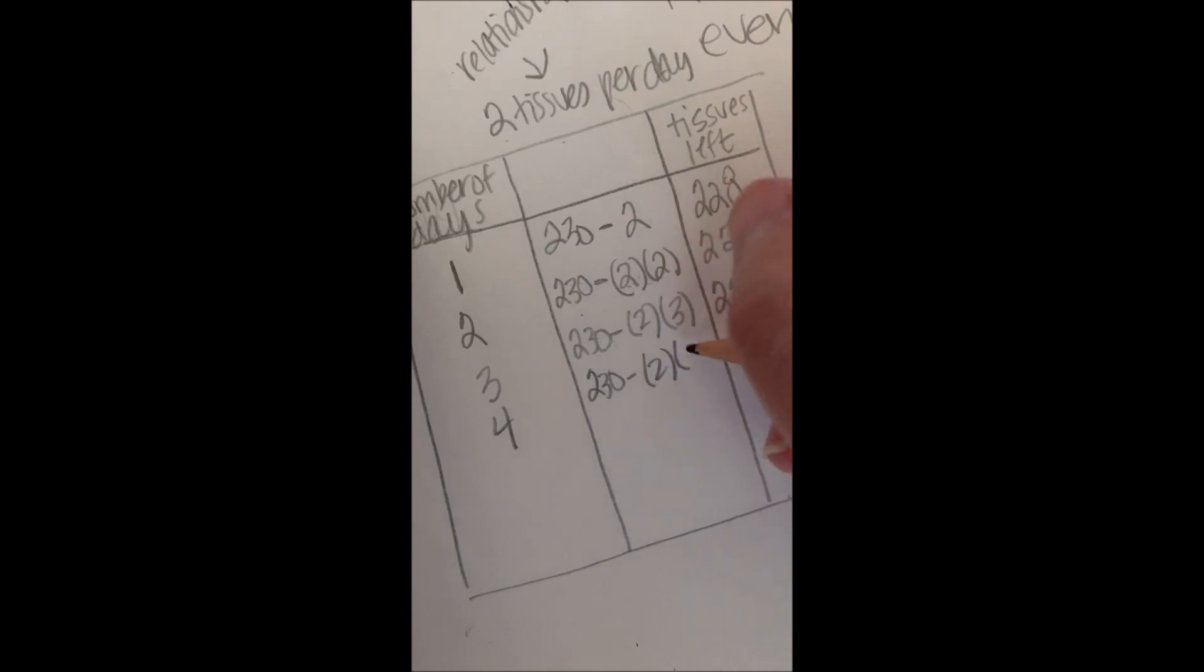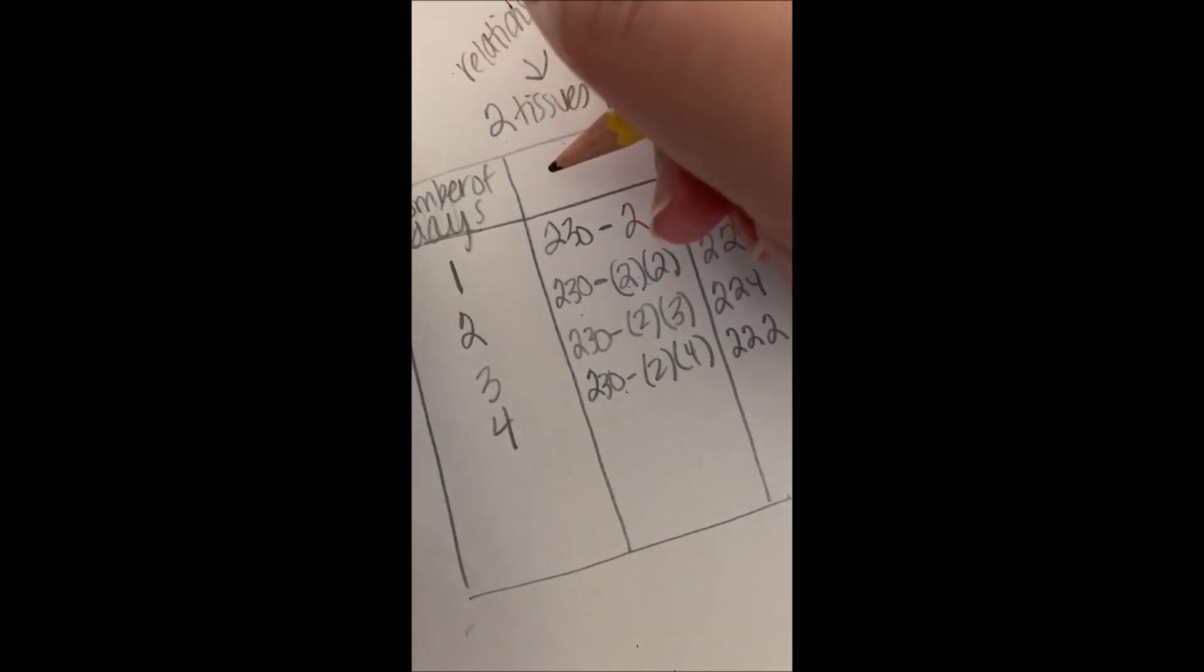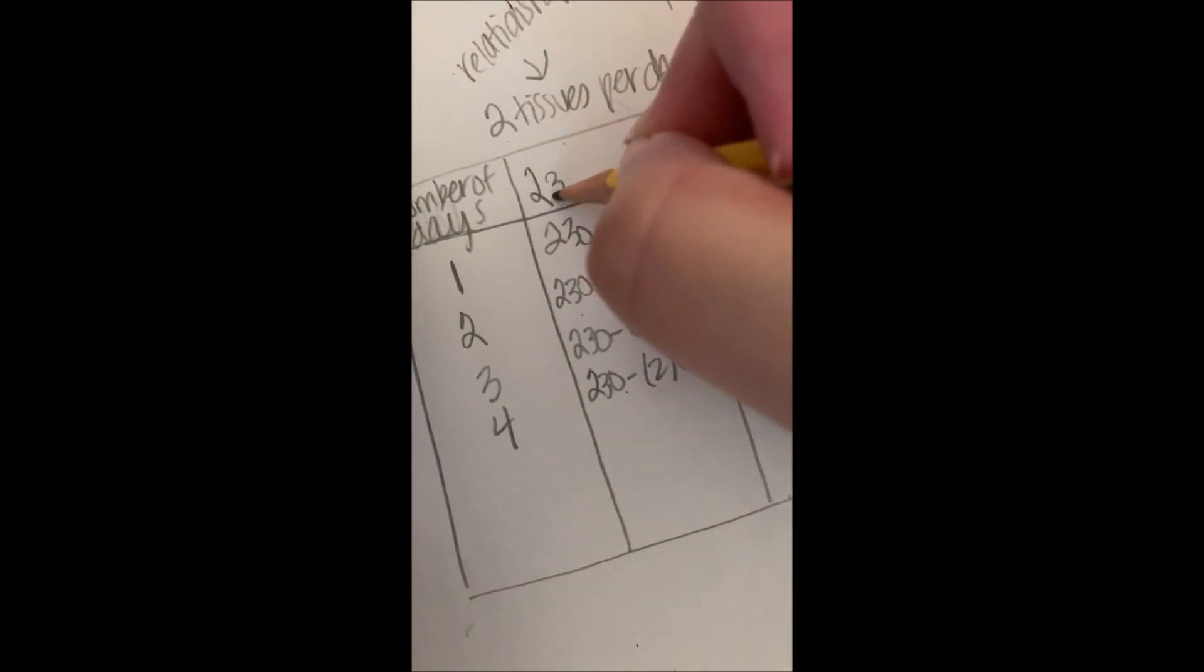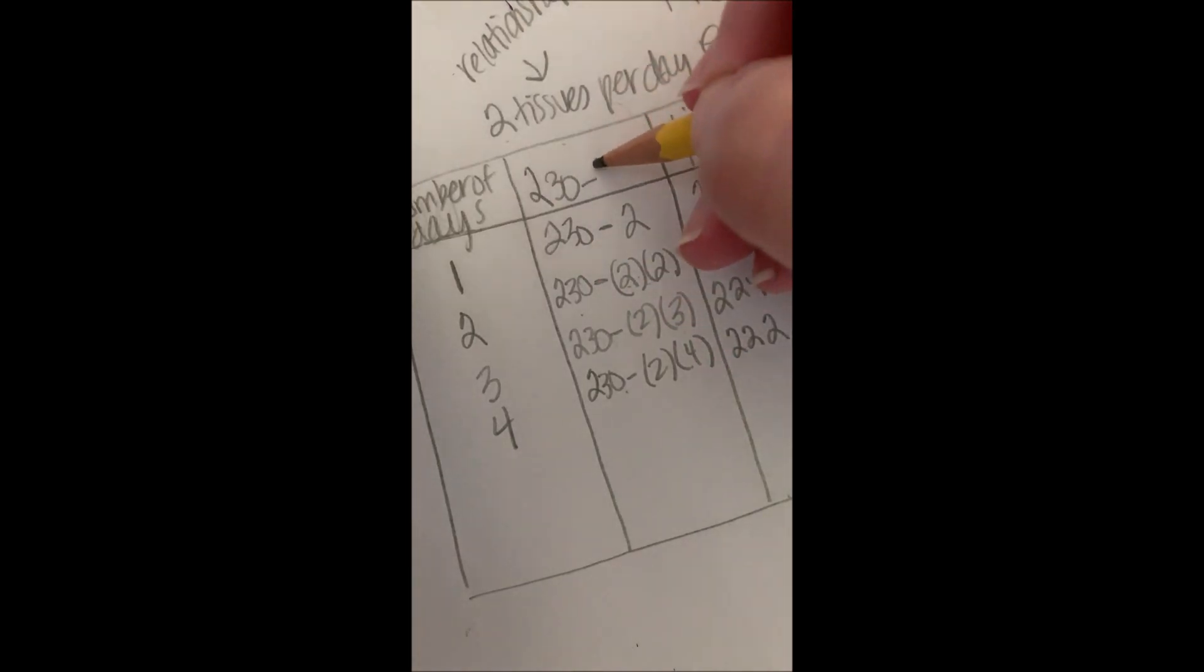Four days. 230 tissues minus two tissues per day times four days. So what am I doing each time? I have 230 minus two tissues per day times the number of days.